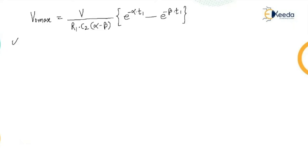Where alpha is nearly equal to 1 upon R1 C2. So R1 is 420, C2 is 1000 picofarad.